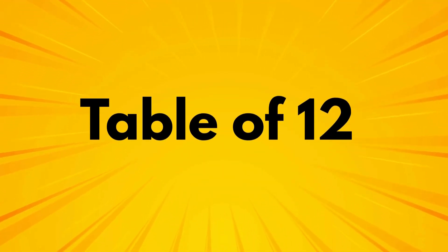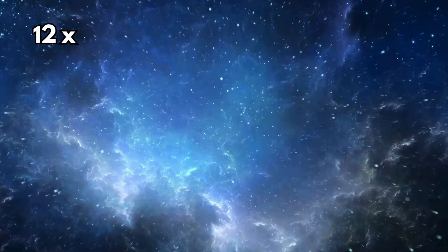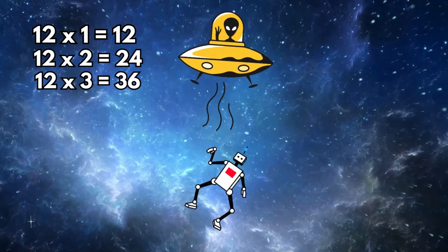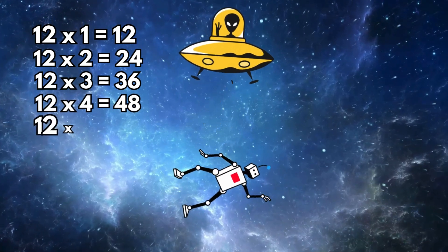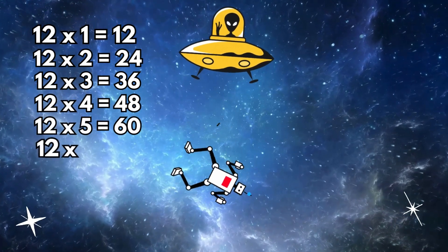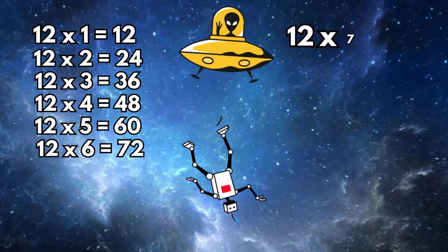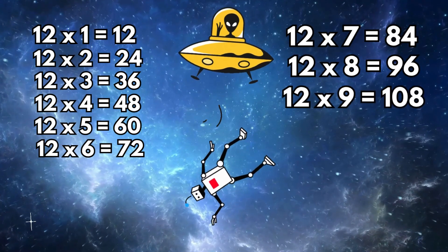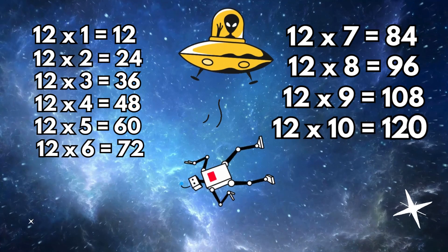Table of 12. 12 1's are 12, 12 2's are 24, 12 3's are 36, 12 4's are 48, 12 5's are 60, 12 6's are 72, 12 7's are 84, 12 8's are 96, 12 9's are 108, 12 10's are 120.